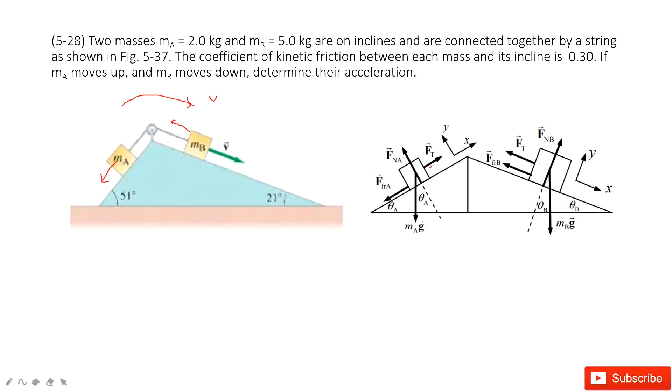So we can see for object A, we have the gravity, normal force, the tension for this cable, and then the friction.